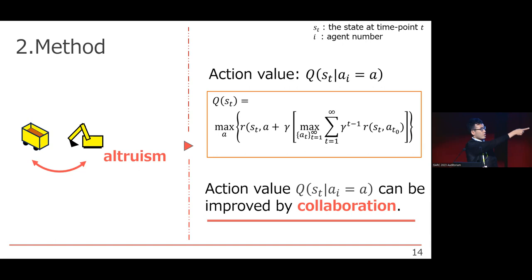And the value relationship among involved agents can be written in this function. Action value Q can be improved by a collaboration effect. We realize the circumstance by using rewarding design theory.